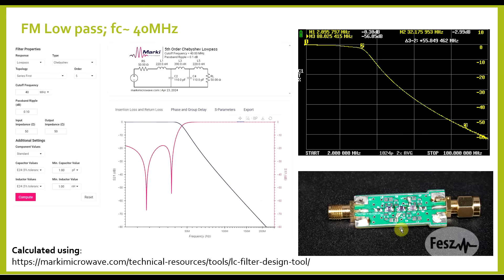Another filter I built was intended to be a low-pass filter to isolate the FM band. For this I used some very small SMD components — both capacitors and inductors — making this a very compact build. But the thin wires from which the inductors are made do have quite a bit of resistance. On the measurement, other than the corner frequency, we can also see a slow but steady drop in the passband, so the loss is increasing as frequency increases.